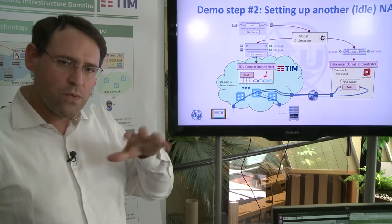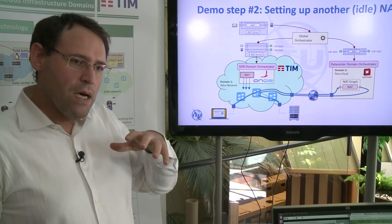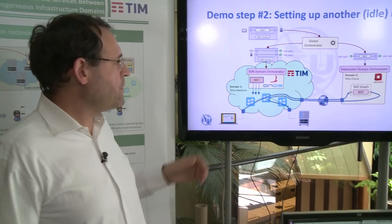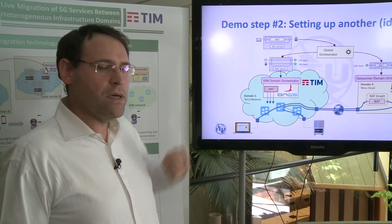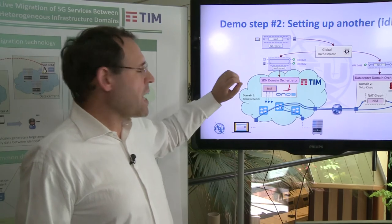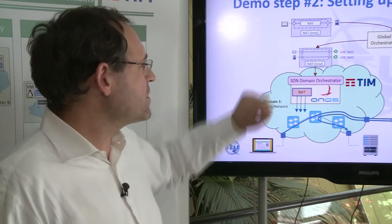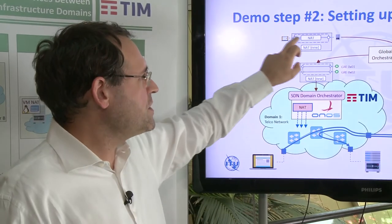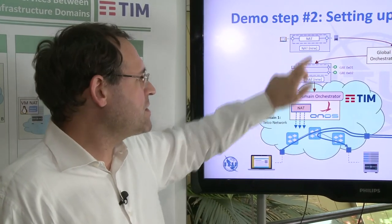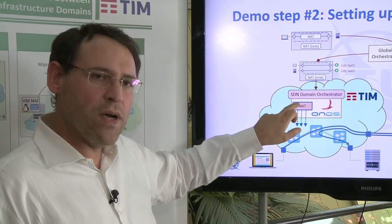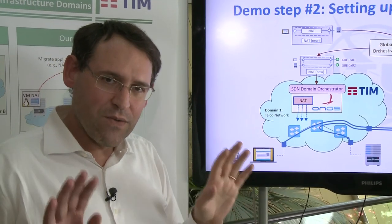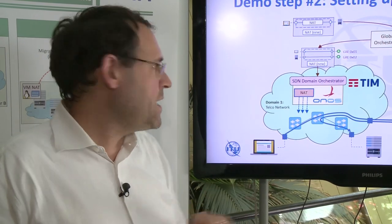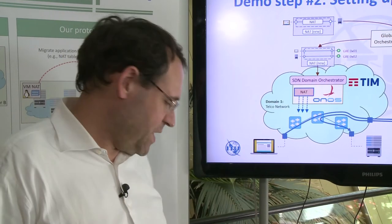The demo divides the migration process into different steps. First, we ask the global orchestrator to create a second NAT in parallel with the first — so instead of one, we now have two. The first is in-line with the service in the data center, and the second is deployed in the SDN domain. We now have two NAT services in parallel: one operating, one just created.